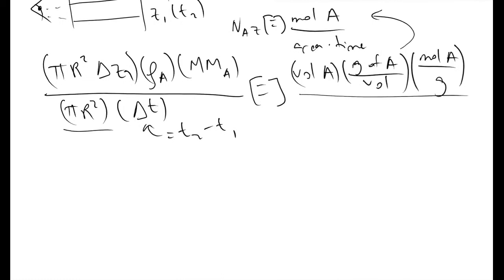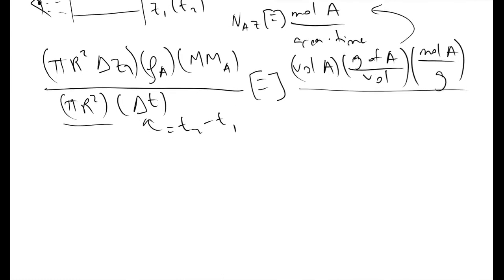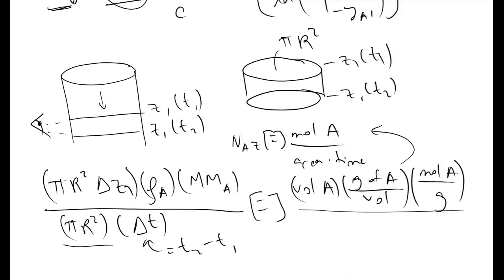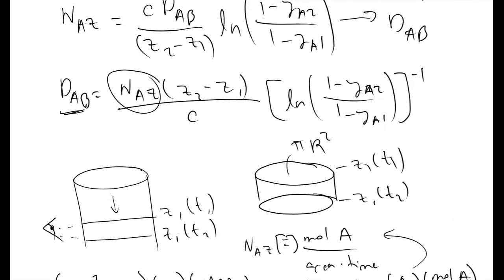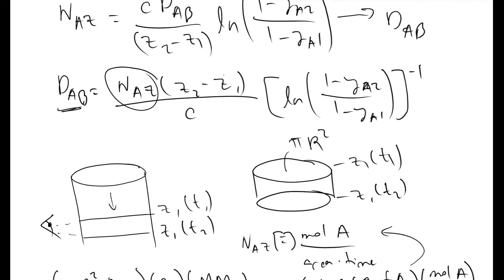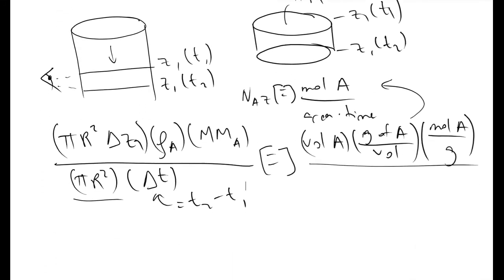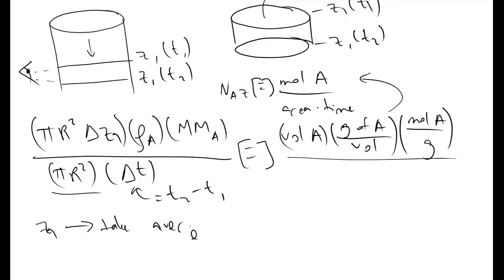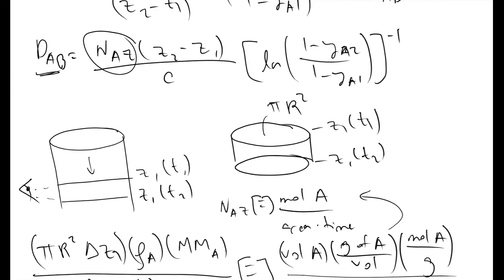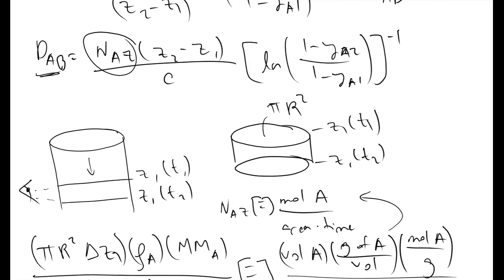This would give you what your flux of A in the Z direction is in practice. So once you have evaluated what NAZ is, the other question is if Z1 is a function of time, you can take an average and use that value in your calculations to actually figure out what your diffusion coefficient should be.